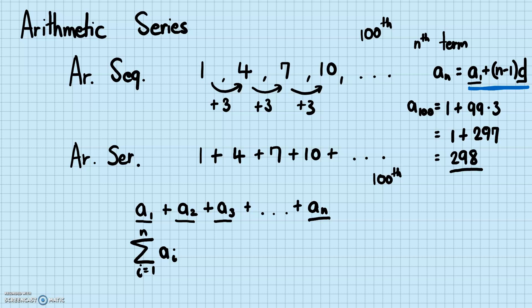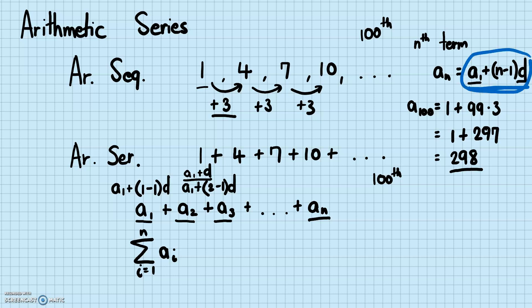For example, the first term can be defined as a₁, but it can also be written as a₁ plus (1 minus 1) times d, since 1 minus 1 is 0, so a₁ plus 0 is just a₁. And a₂ can be written as a₁ plus (2 minus 1) times d, which is a₁ plus d. So each term in an arithmetic sequence can be defined with this formula, and we can substitute that formula into the summation.